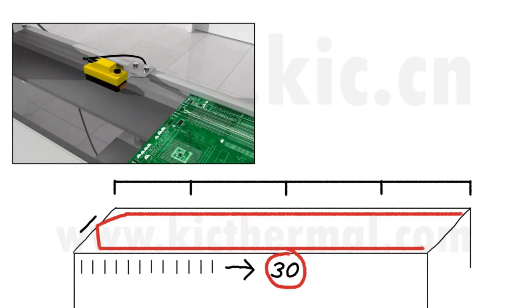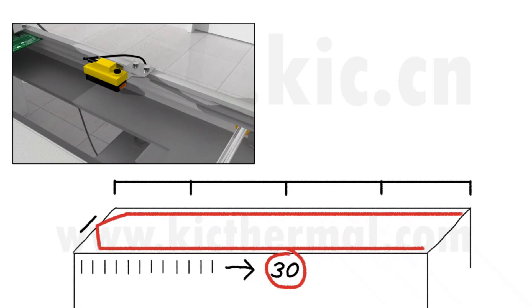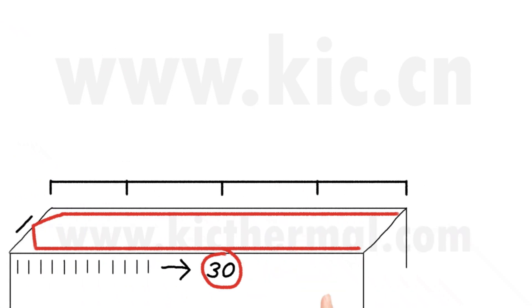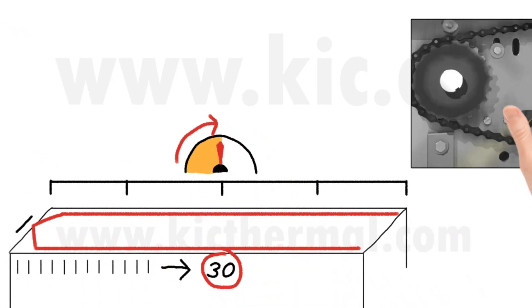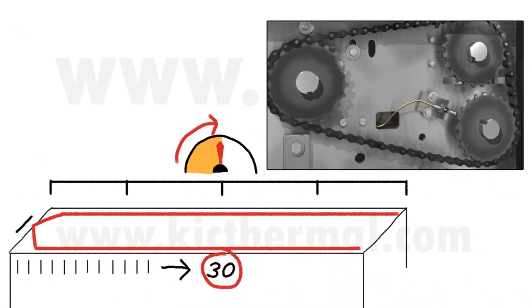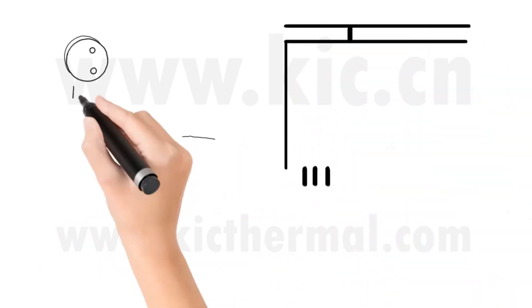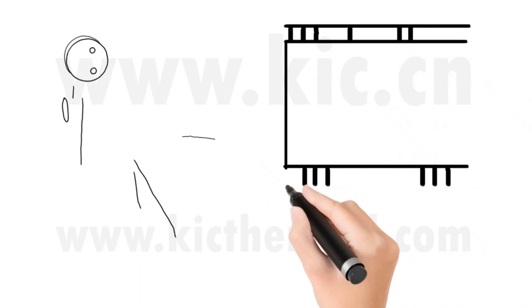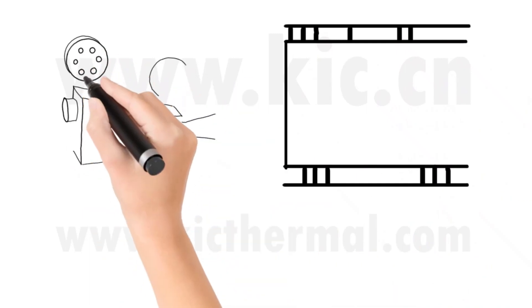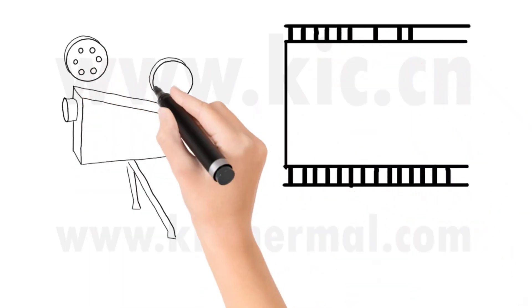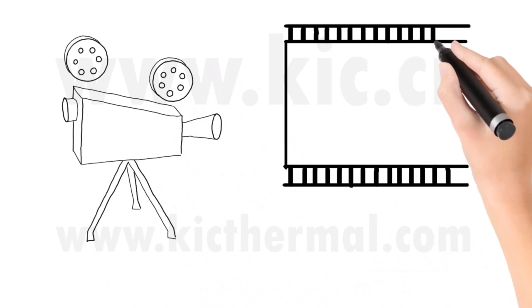The Kik Automatic System also uses a board sensor at the entrance of the oven to determine when the board entered the oven and to calculate the real-time process data. The Kik Automatic System uses a speed encoder sensor installed directly to the oven conveyor drive to continuously monitor the oven conveyor speed. The combination of these sensor inputs allows the Kik System to know precisely where the board is at all times and accurately measures and calculates real-time changes in the thermal process.